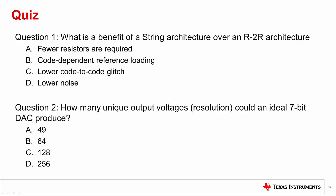Now let's do a short quiz to cover what we've learned today. Question 1. What is the benefit of a string DAC architecture over an R2R DAC architecture? Is it a fewer resistors are required, b code-dependent reference loading, c lower code to code glitch, or d lower noise? The answer is c lower code to code glitch. A string DAC generally has much lower code to code glitch than an R2R DAC.